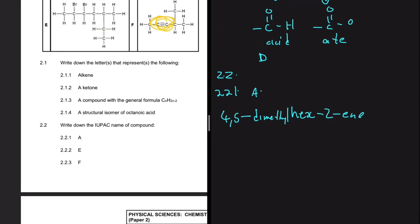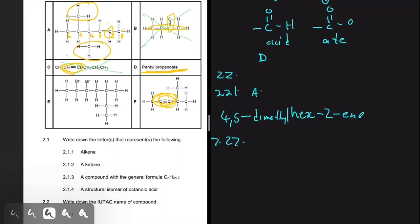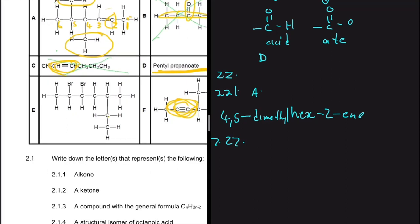For 2.2.2, we need the IUPAC name of compound E. Looking for the longest carbon chain: counting one way gives seven carbons, and any other path gives six. So the longest chain has seven carbons — the prefix is 'hept'.